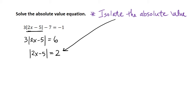Once we have it isolated, we can break it into the two parts. We're saying that the distance of 2x minus 5 from 0 is 2. So that could be in the negative realm or the positive realm. We'll break that into both sides.